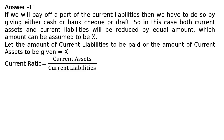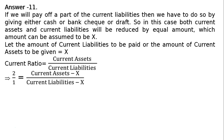Current ratio equals current assets upon current liabilities, which should equal 2 upon 1. Presently the current ratio maintained by the company is 1.5 is to 1, but we want to make it 2 is to 1. Hence, we have to utilize current assets to pay current liabilities by an amount x. So the equation becomes: current assets minus x divided by current liabilities minus x equals 2 upon 1.